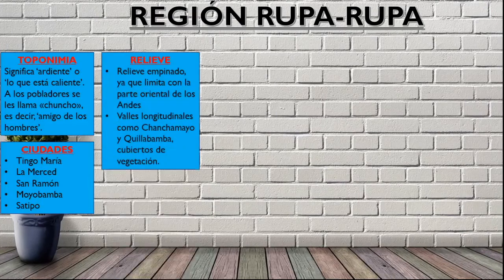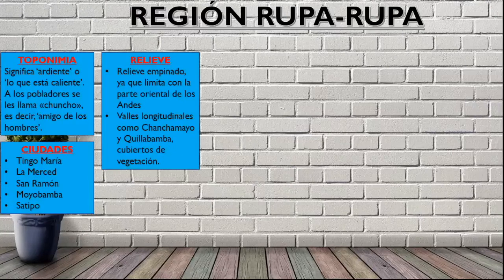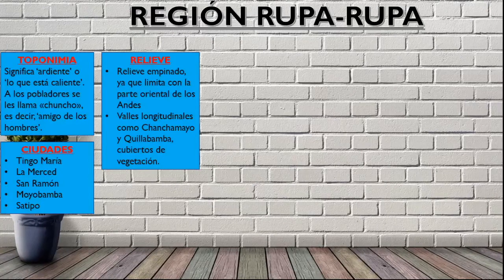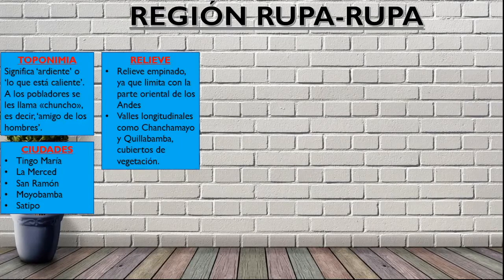¿Cómo es el relieve de la Rupa Rupa? Ya que se encuentra en la parte oriental de los Andes, todavía cerca a la cordillera, su relieve es un poco empinado, por lo mismo que la denominación «Selva Alta». Dentro de la Rupa Rupa también vamos a tener los valles longitudinales como Chanchamayo y Quillabamba, los cuales están cubiertos de gran vegetación y también gran cantidad de árboles.